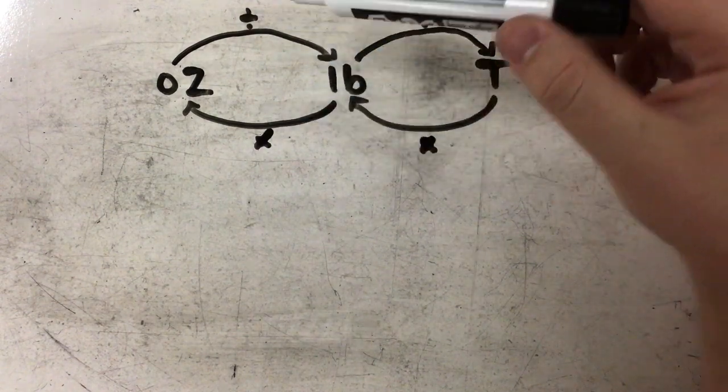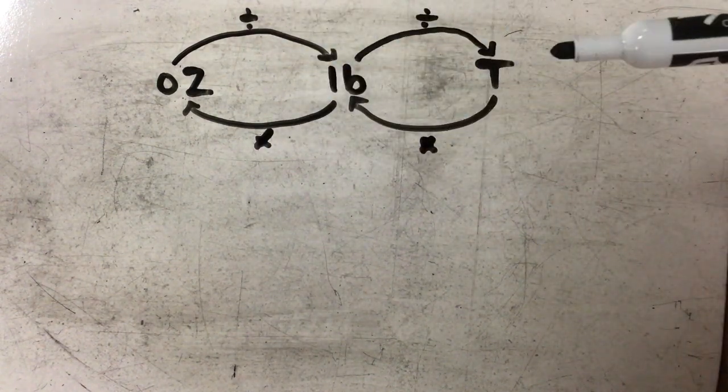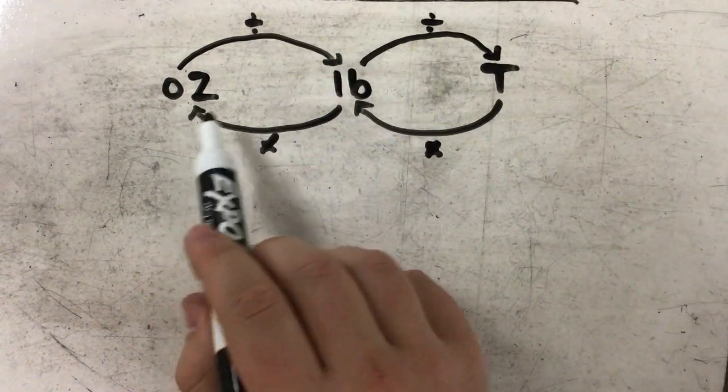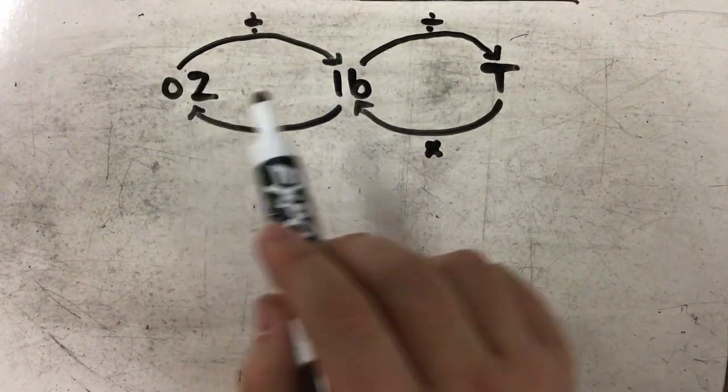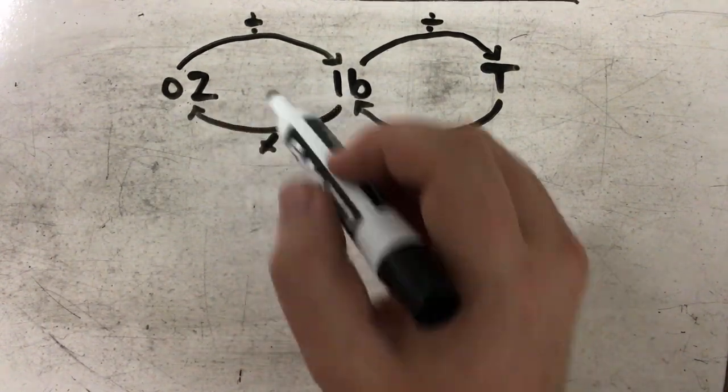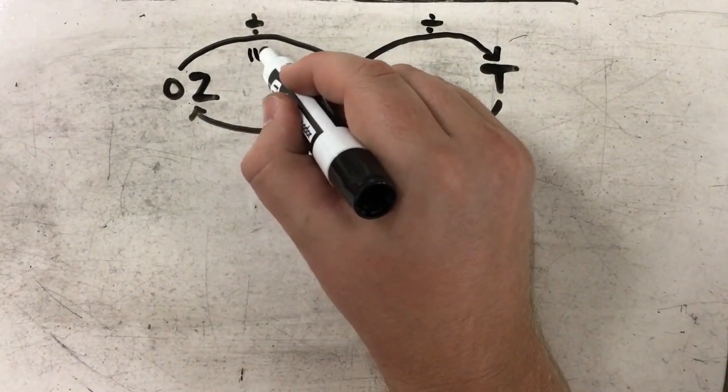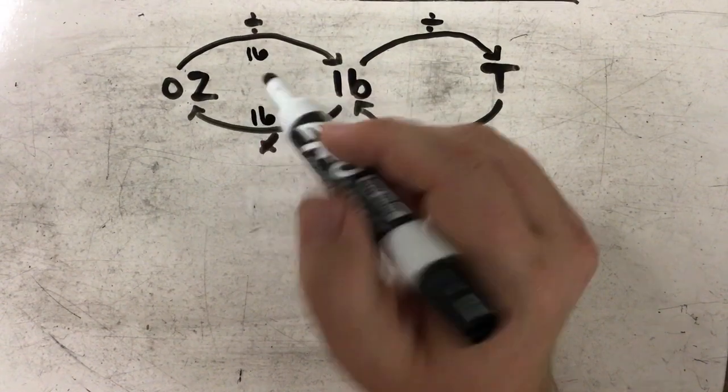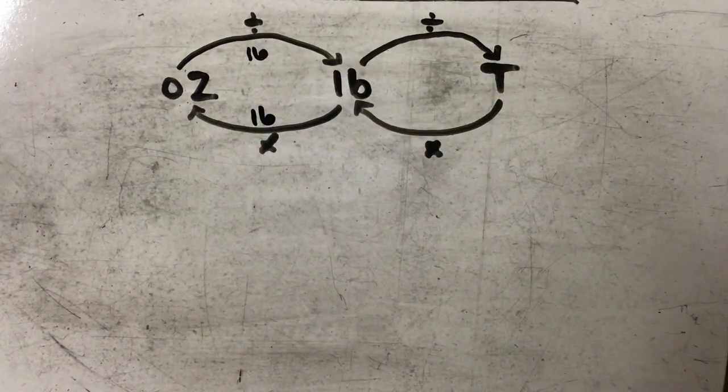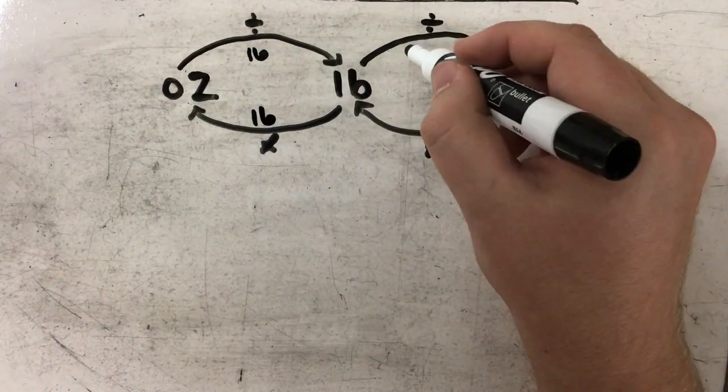Okay, and then finally we need to fill in our magic numbers, so we know what are we dividing or what are we multiplying by. And our magic numbers simply come from how many of the smaller unit is in one of the larger units. So between ounces and pounds, my magic number is 16, because there are 16 ounces in one pound.